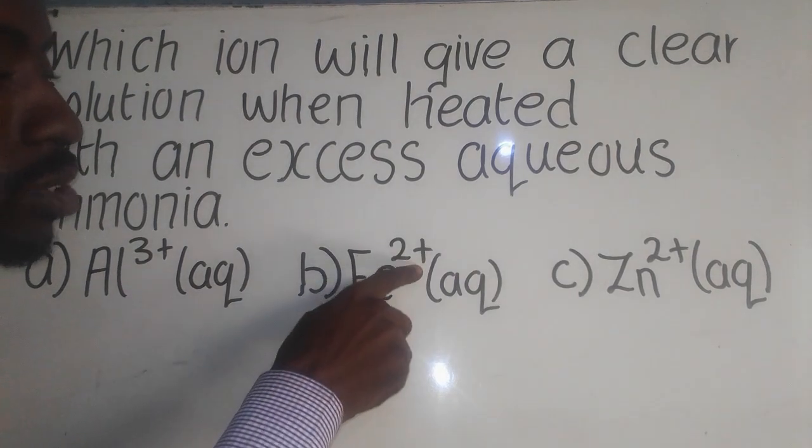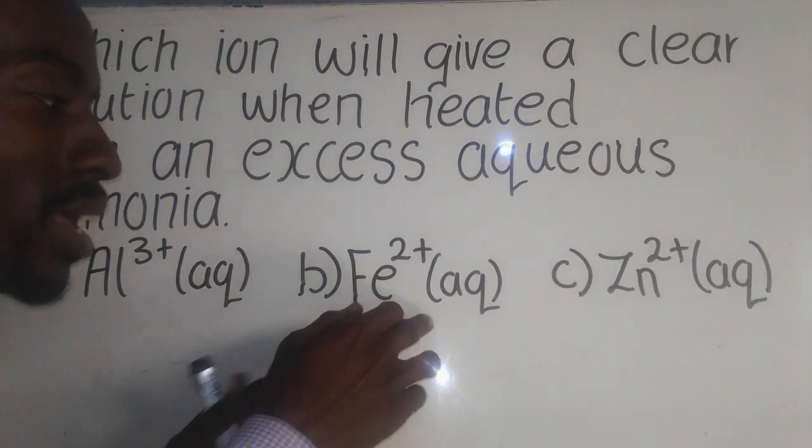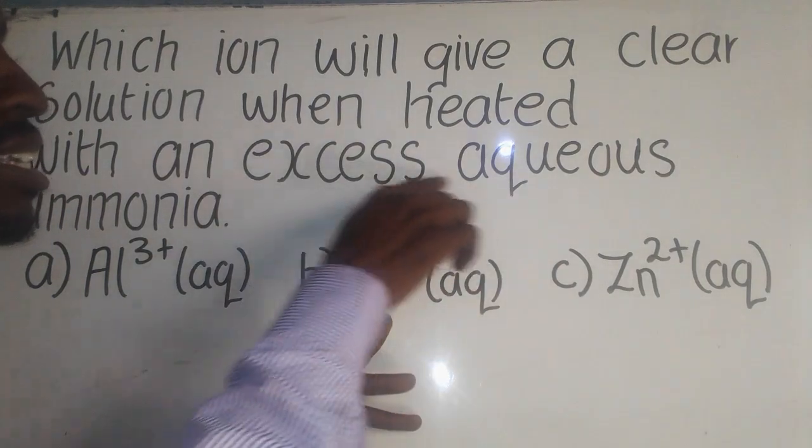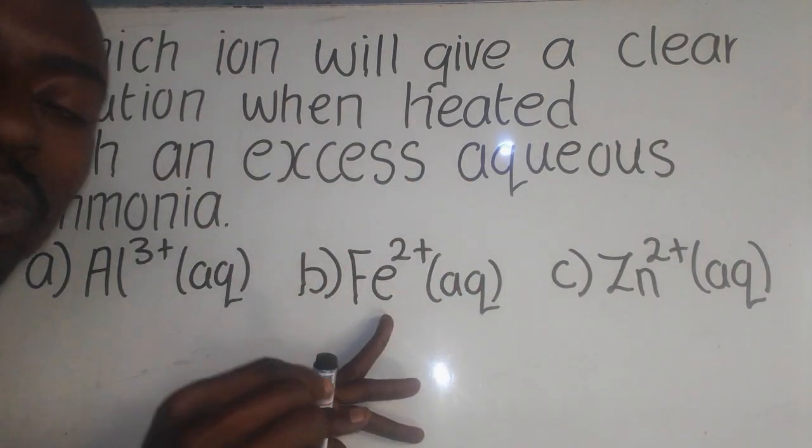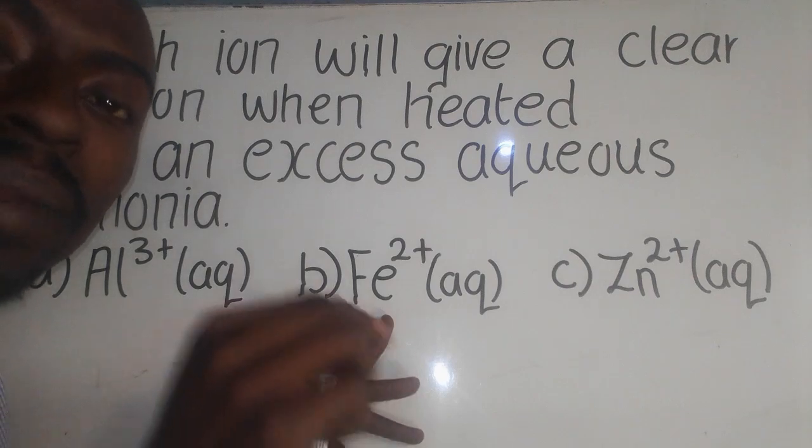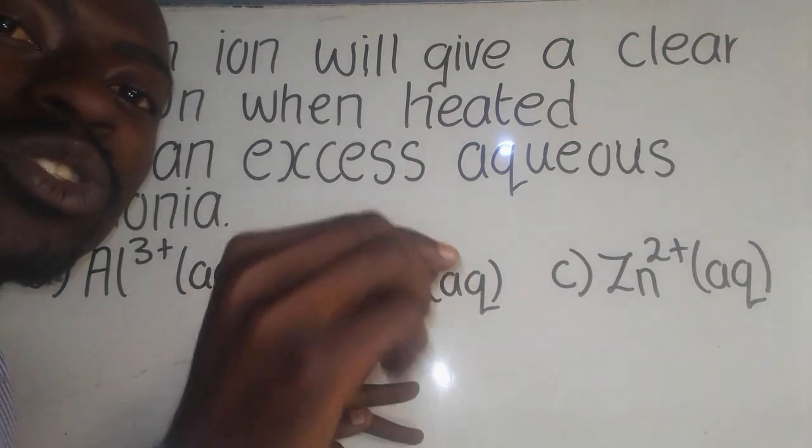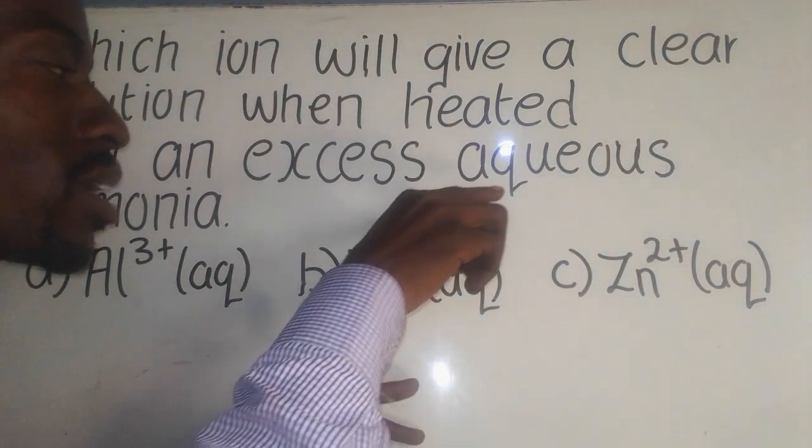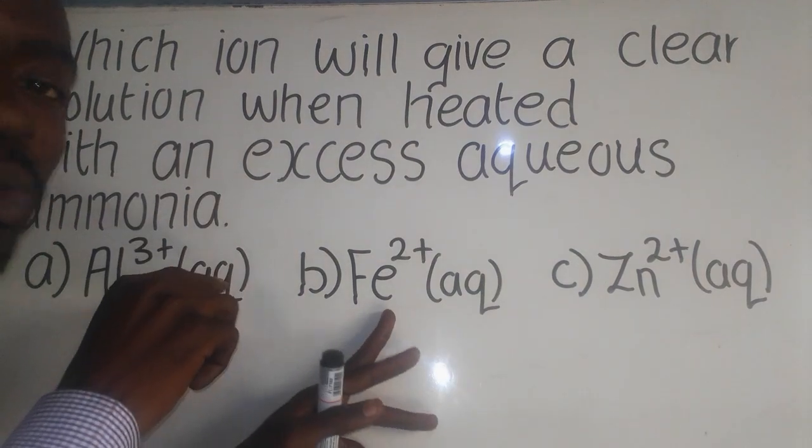When they say ion to ions, this one here, when it is heated with the excess aqua ammonia, it forms the green precipitate which are insoluble in the aqua ammonia. So, this one, no.